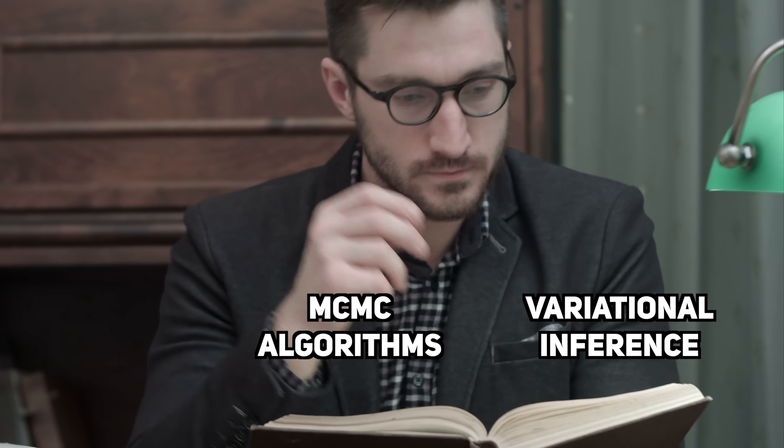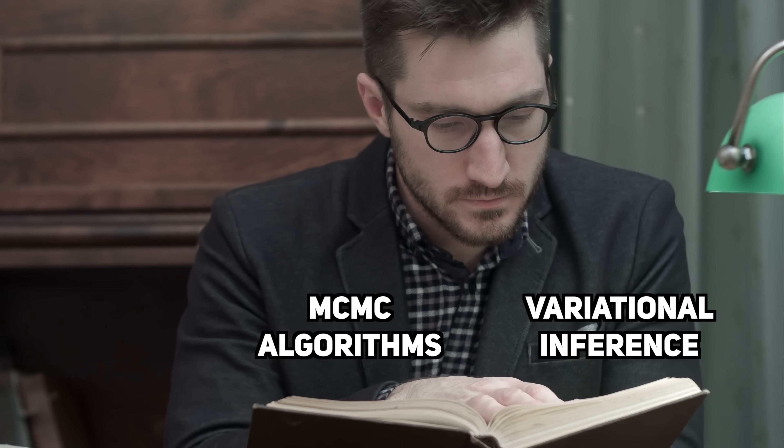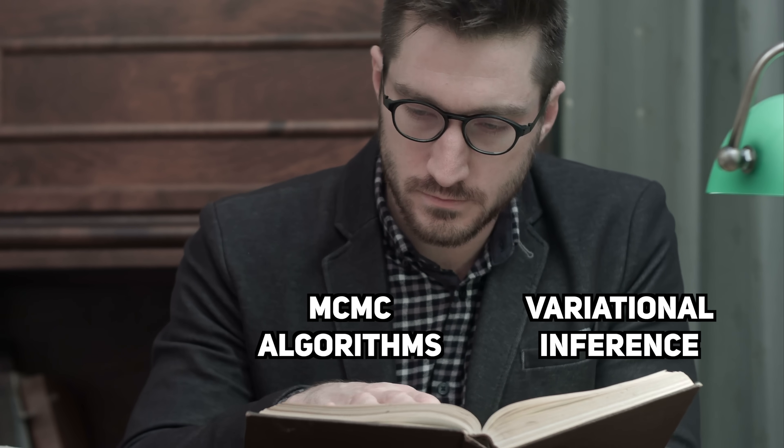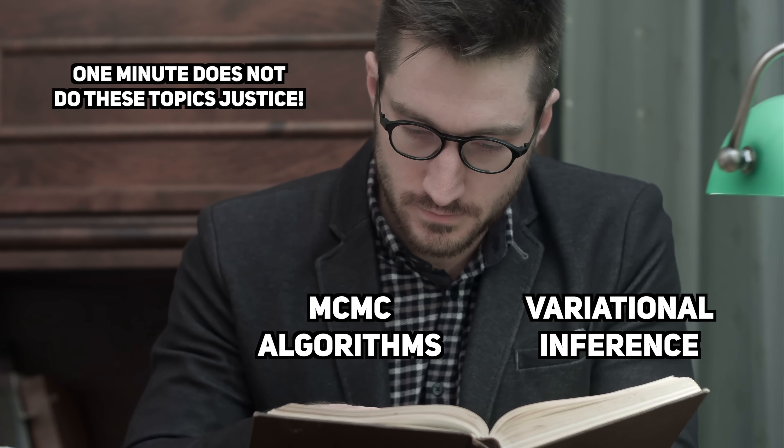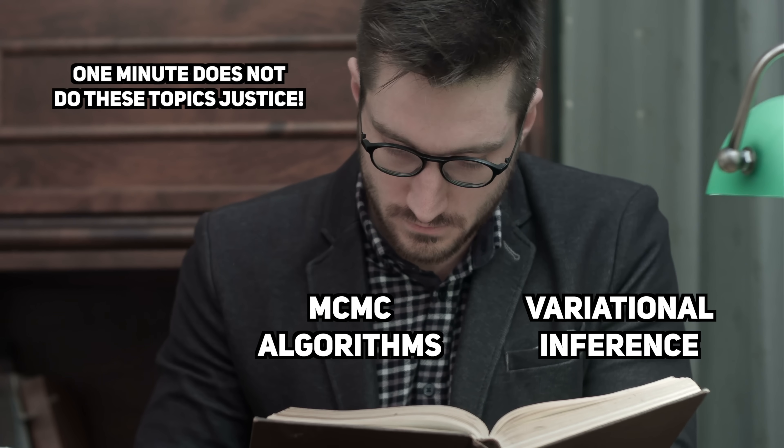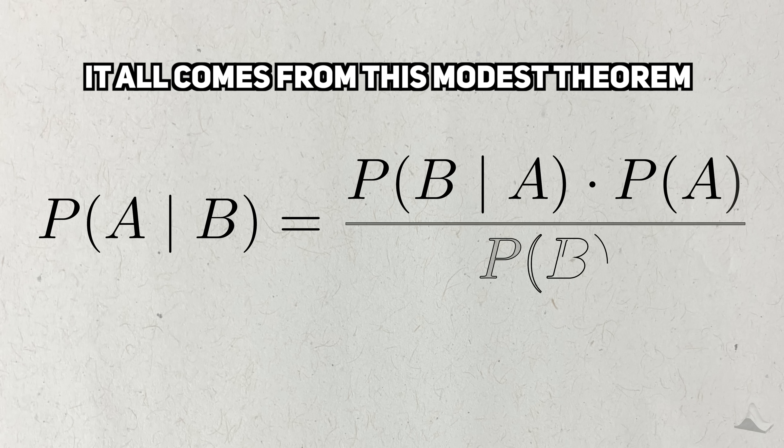MCMC and variational inference are examples of advanced techniques that you'll need to pick up if you want to be a Bayesian statistician. I only gave very brief introductions to both of these topics, but I wanted to give you a taste of how far we've gotten from this simple little theorem that the Reverend gave us in 1963.